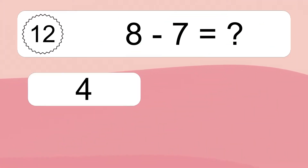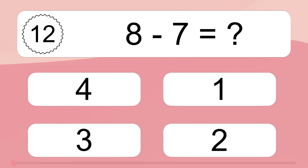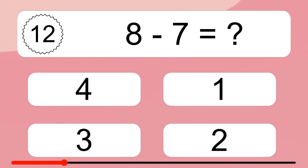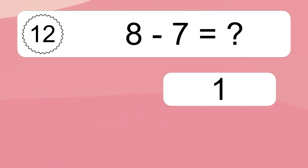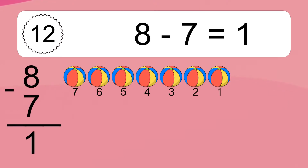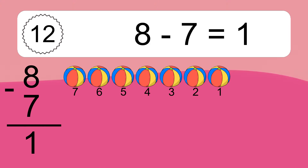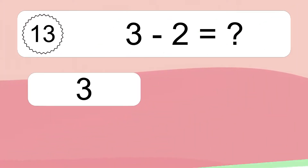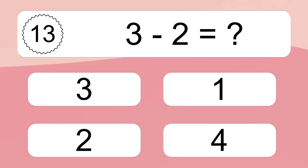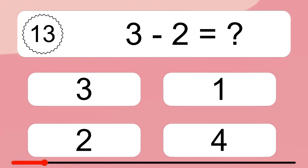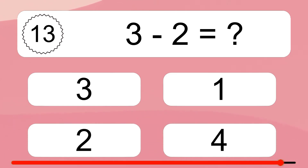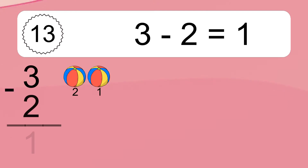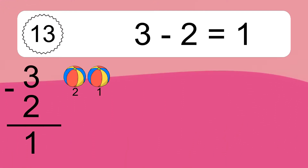8 minus 7 equals what? 8 minus 7 equals 1. Let's count it: 7, 6, 5, 4, 3, 2, 1.